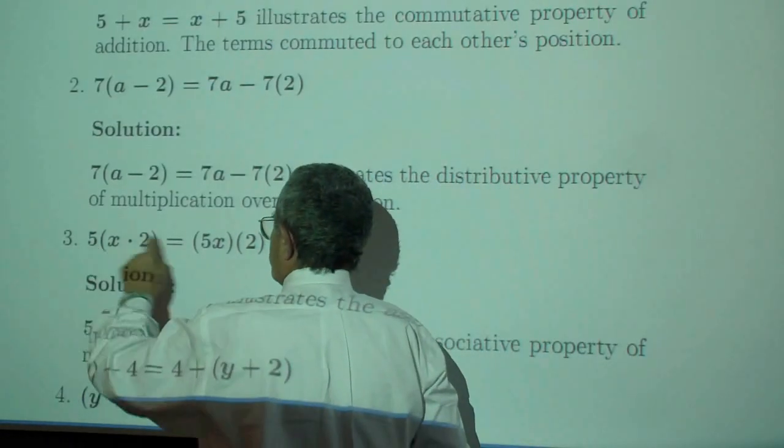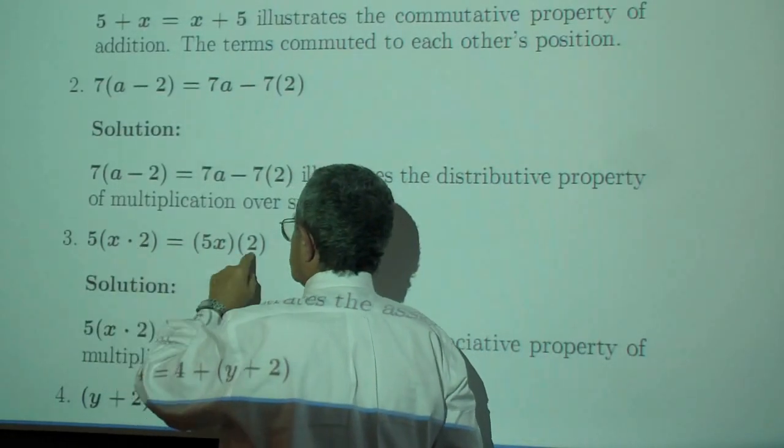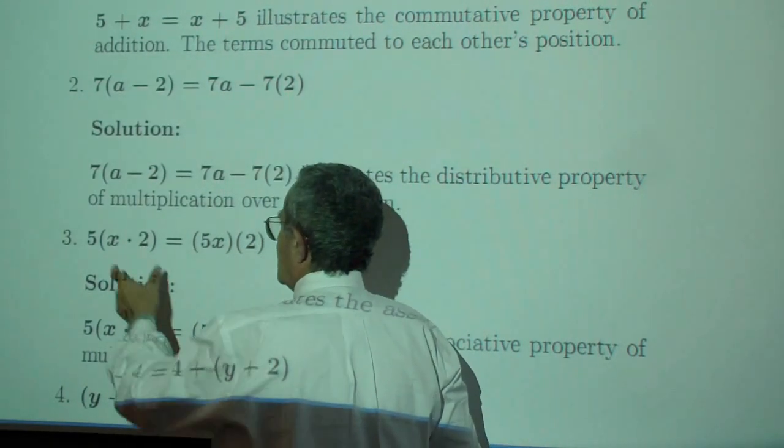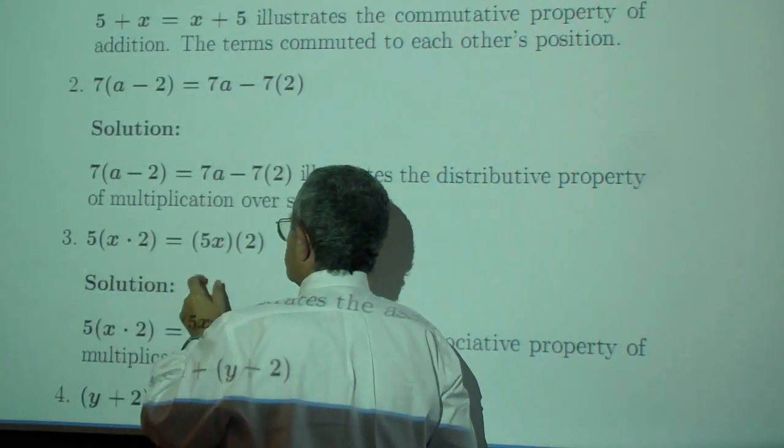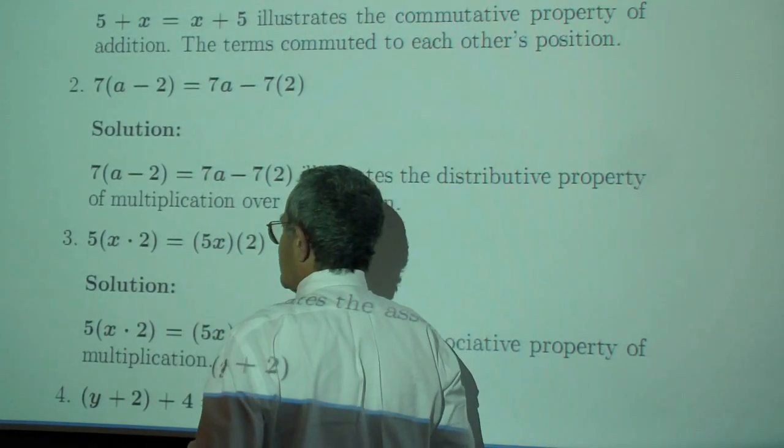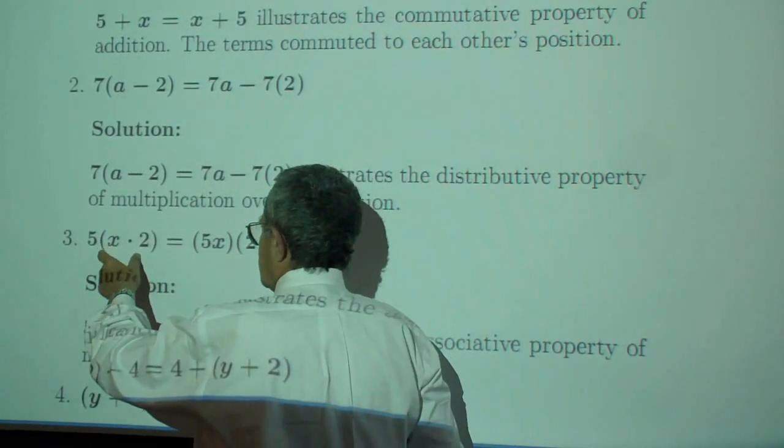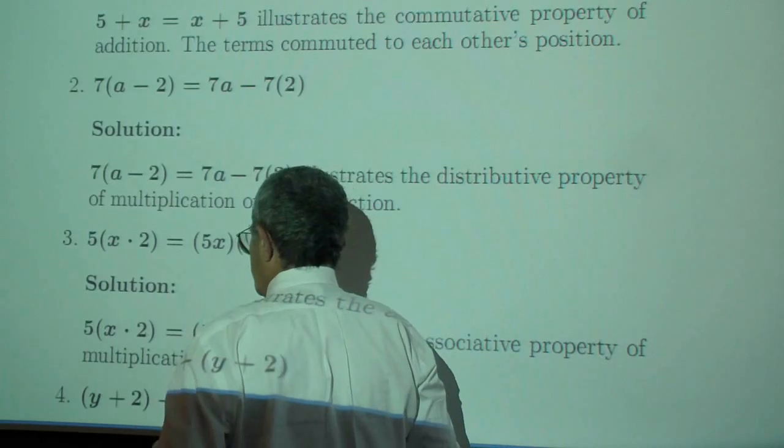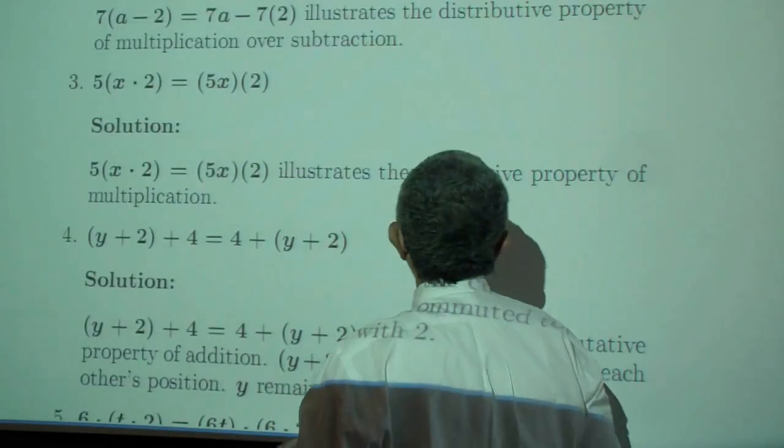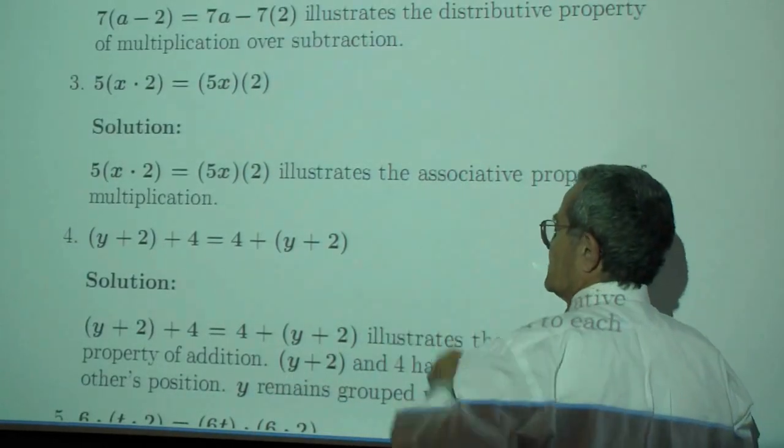The five is in first place, the x in second place, the two in third place. No commuting. We associated the x with the two. We associated the five with the x. We have applied the associative property of multiplication, associative property of multiplication.